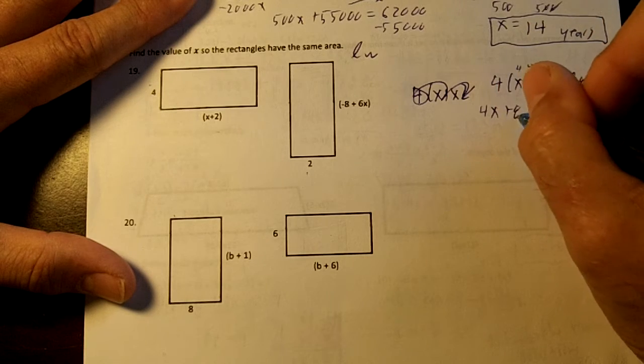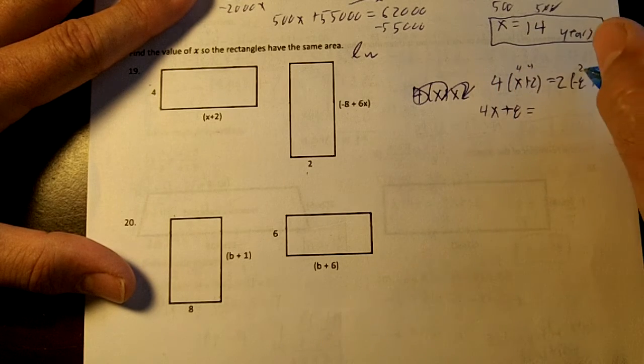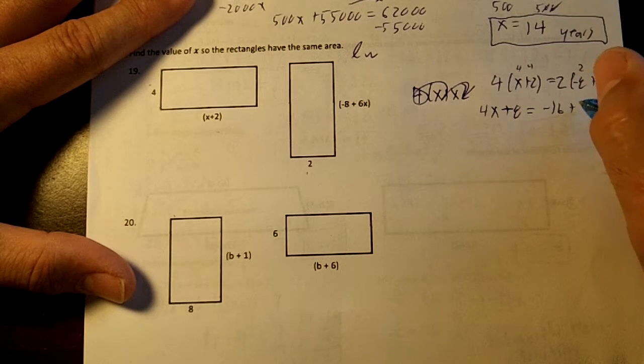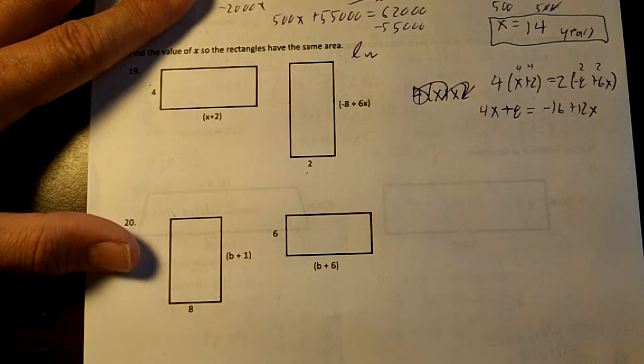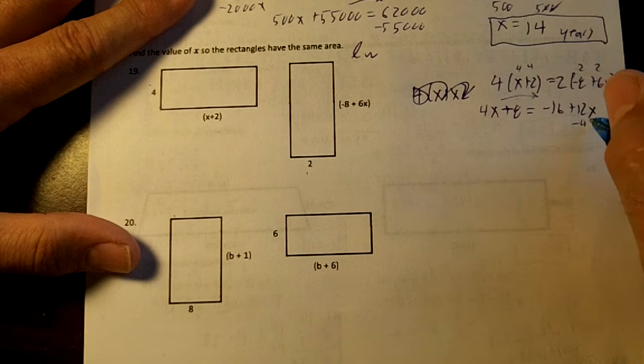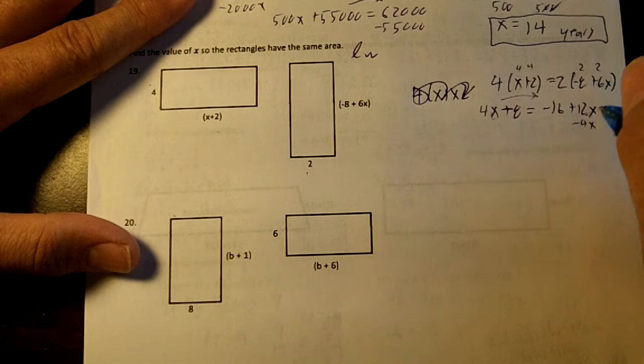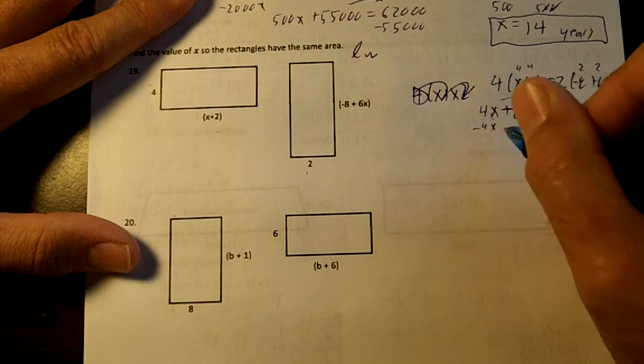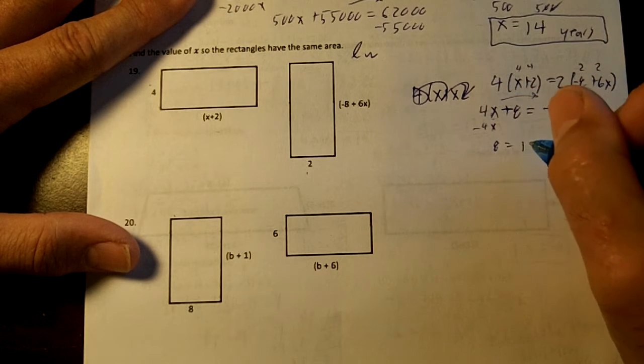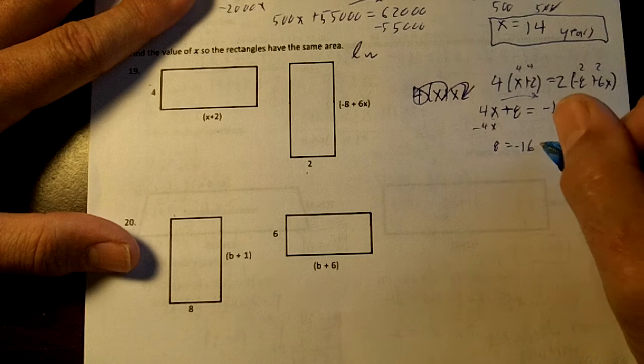4x plus 8 equals, take the 2, negative 16 plus 12x. And then you move over the 4x. Move the smaller x. My 4x is smaller than 12x, so I'm moving it across. So we get 8 equals negative 16 plus 8x.